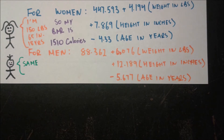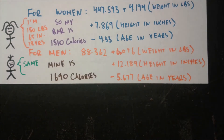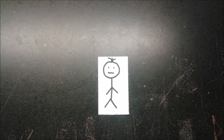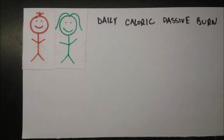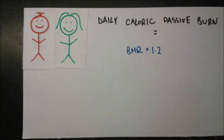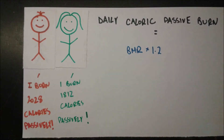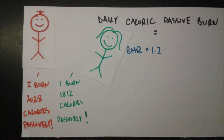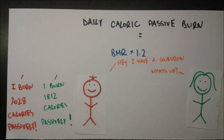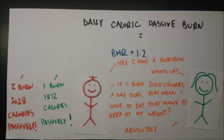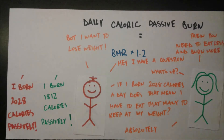Using those stats, her BMR is 1,510 calories and his is 1,690 calories. But as humans, we actually do things, so we account for that with the daily caloric passive burn: BMR times 1.2. She burns 1,812 calories a day passively, and he burns 2,028. If he eats 2,028 calories a day, he'll maintain his current weight — but he wants to lose weight.